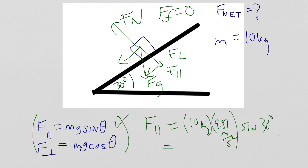The sine of 30 degrees is 0.5. And I have 0.5 times 10, which is 5. And then 5 times 9.8, essentially, we get 49. And the units here are newtons.